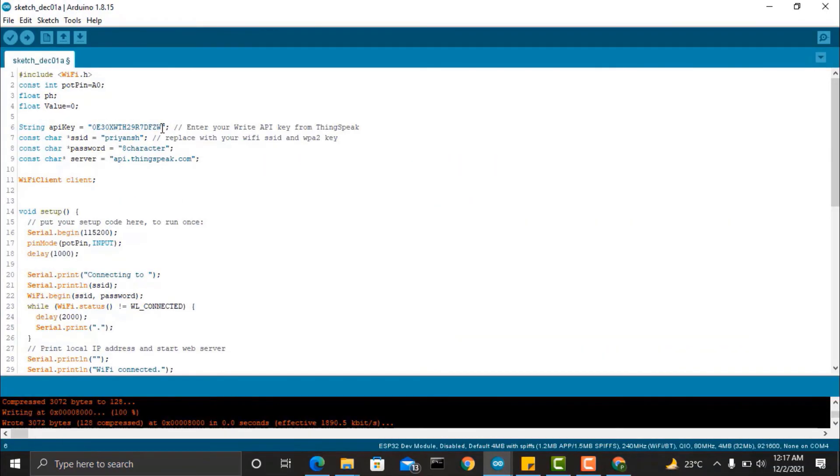Paste the API code in the Arduino code and update the Wi-Fi SSID and password.